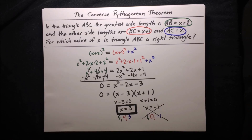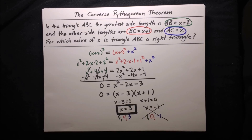Now we know how to use the Converse Pythagorean Theorem to tell whether a triangle is right, acute, or obtuse just based on its side lengths. In the future, we will also learn about special kinds of right triangles, such as isosceles right triangles and 30-60-90 right triangles.